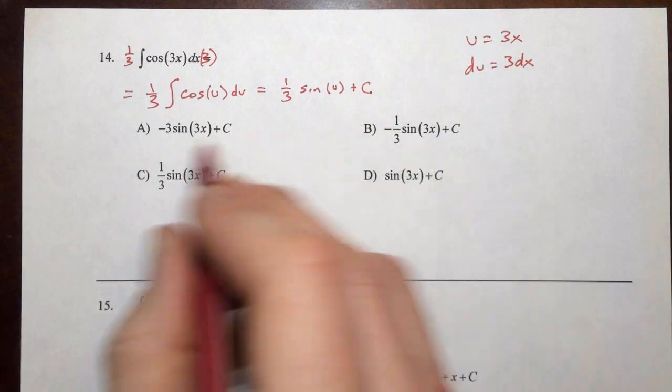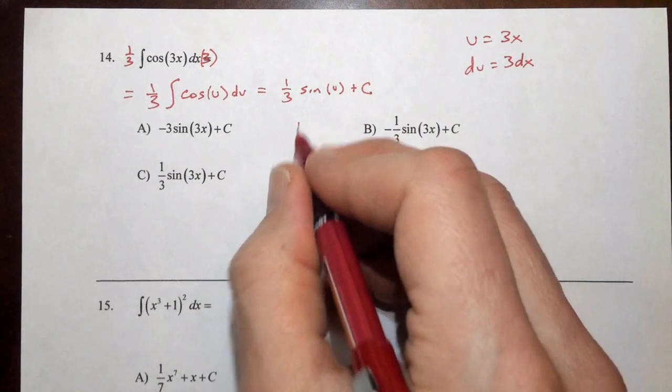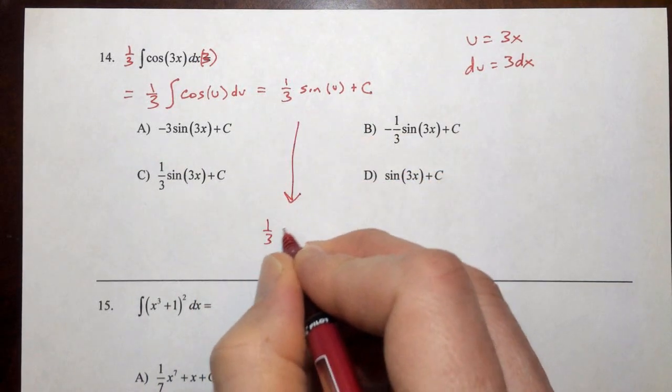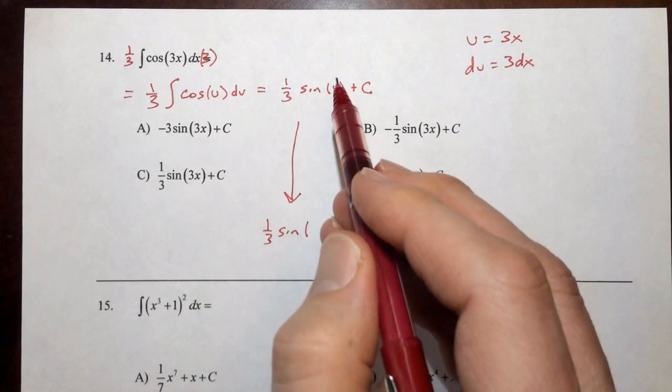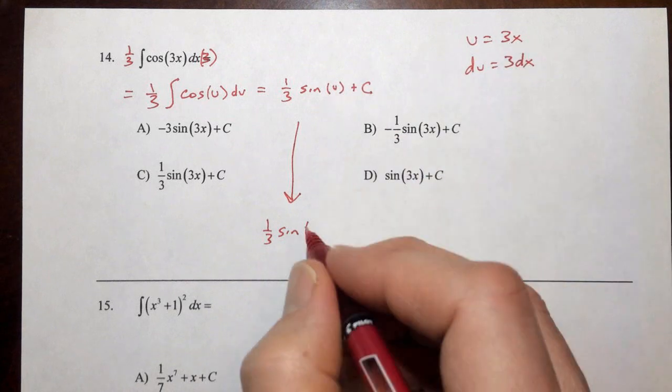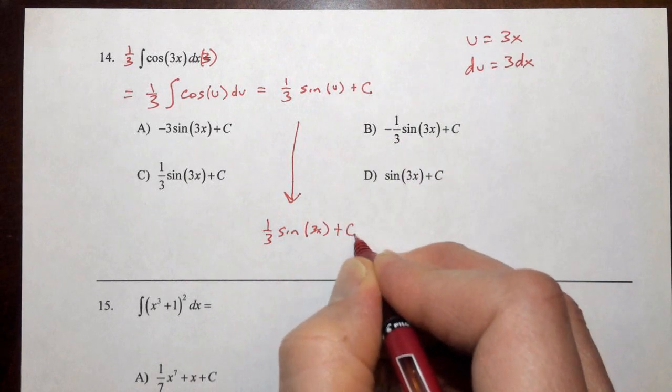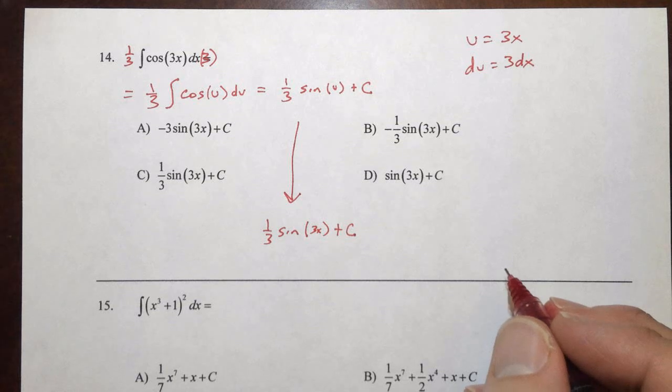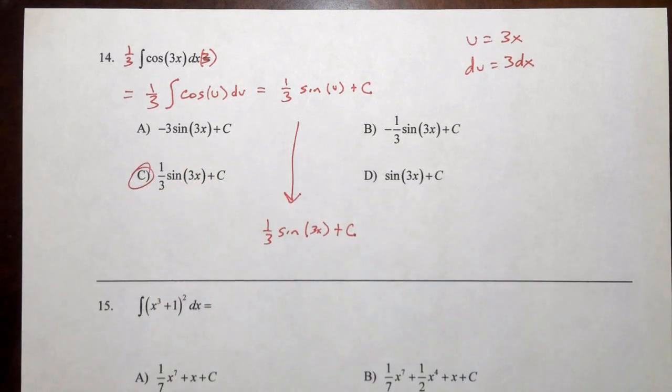We don't see any u's in our answer, so we can back substitute. We'll have one-third sine u we know is 3x. So it's sine of 3x plus C. Now we're looking for that answer, and we can see it is right there with C.